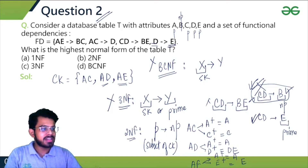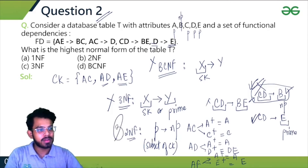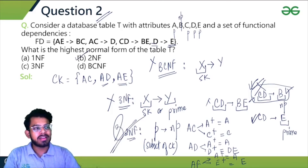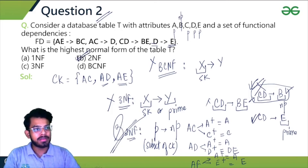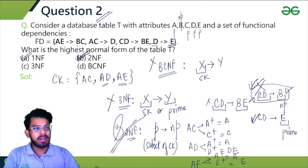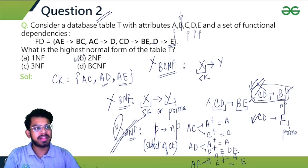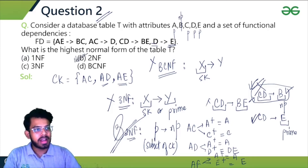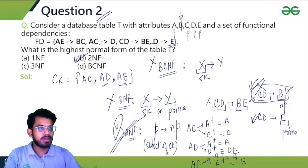Since no partial dependency exists — meaning we never get a non-prime attribute from a prime proper subset of a candidate key — the relation is in 2NF. If this is an MSQ question, both 2NF and 1NF would be correct, since every 2NF relation is also 1NF. But since the question asks for the highest normal form, the answer is 2NF.